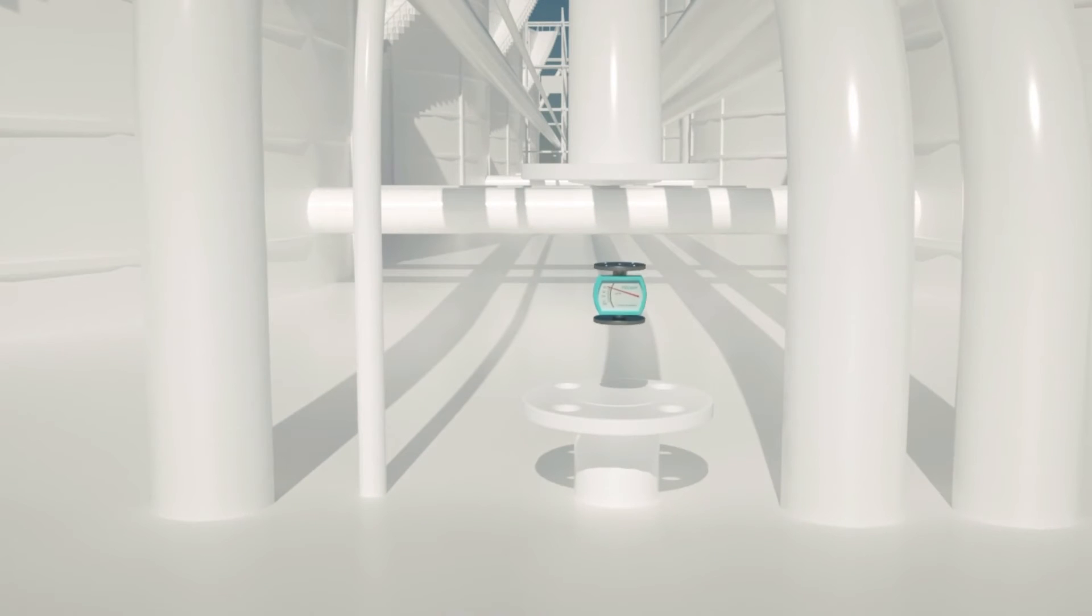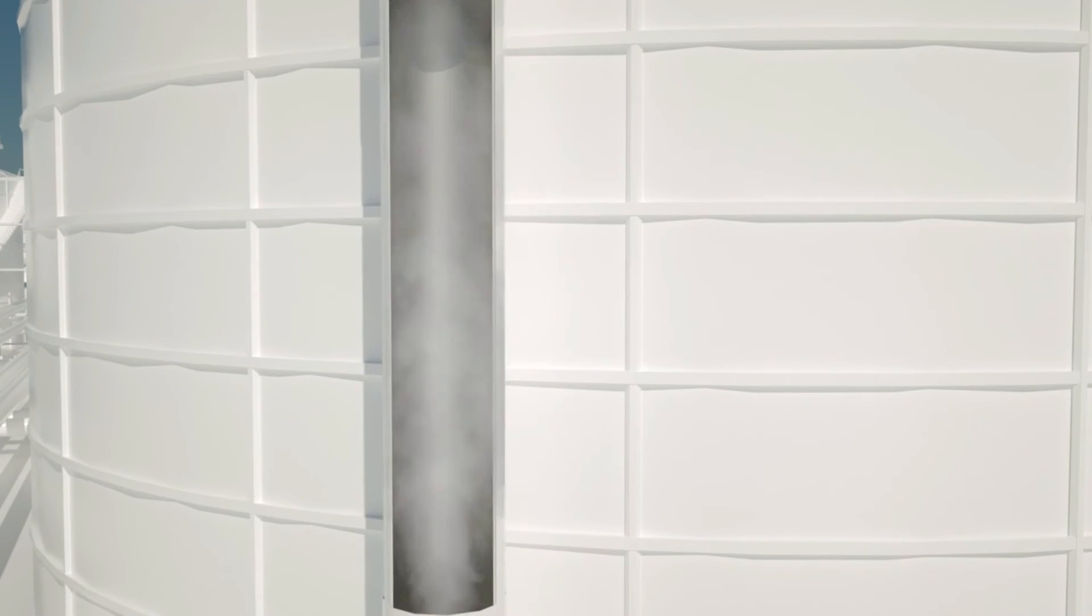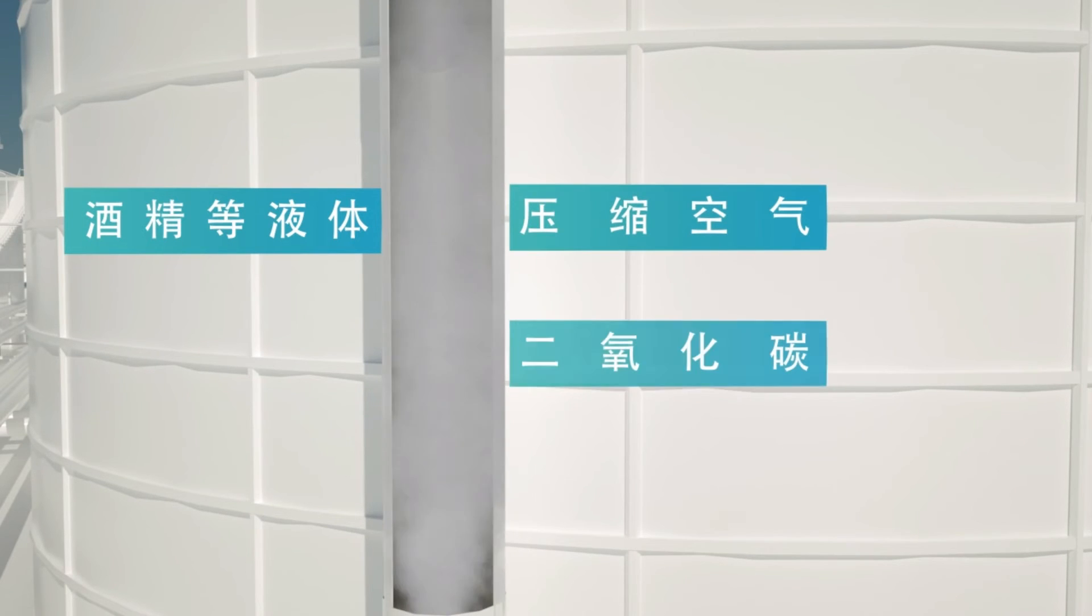According to installation needs, you can choose flange connection type or threaded connection type. Metal rotor flow meter is widely used. In addition to alcohol and other liquids, it can also be used for compressed air, carbon dioxide and other gas measurement.